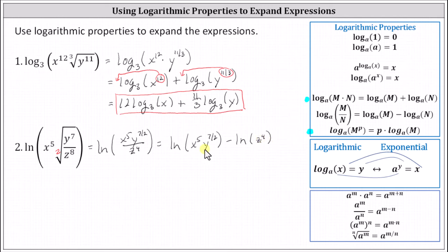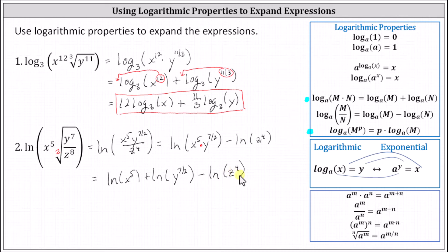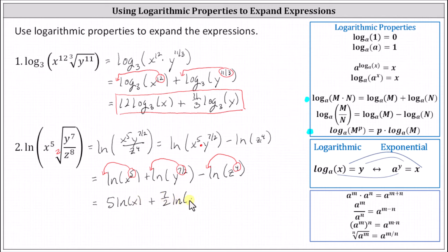From here, x to the fifth y to the power of seven halves is a product. Therefore, the log can be expanded and written as natural log of x to the fifth plus natural log of y to the seven halves, and of course we still have minus natural log of z to the fourth. For our final step, we can apply the power property of logarithms and move each exponent to the position of the coefficient, which gives us five natural log of x plus seven halves natural log of y minus four natural log of z. And now we have the expression expanded as much as possible.